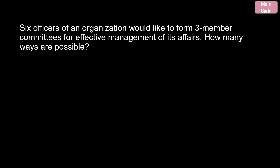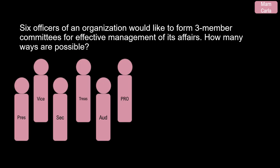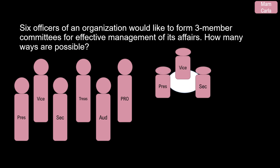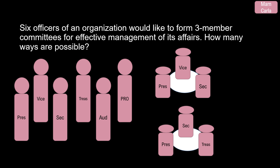Let us deal with this problem. Six officers of an organization would like to form three-member committees for effective management of its affairs. How many ways are possible? The membership in a committee need not be in order. Our interest is to find how many subsets of three officers can be formed from the set of officers, and we call that a combination of six officers taken three at a time, denoted by this symbol.